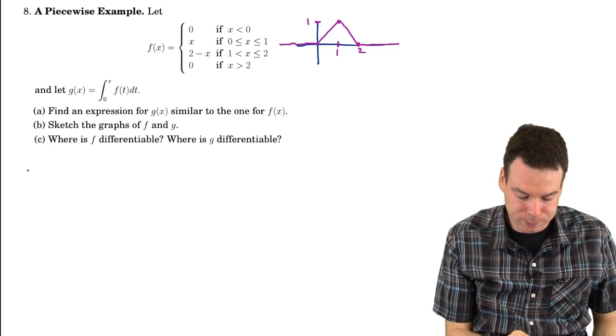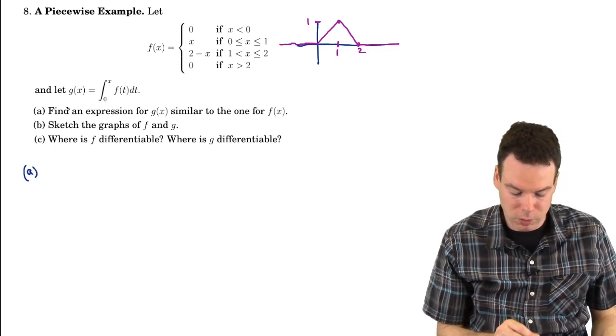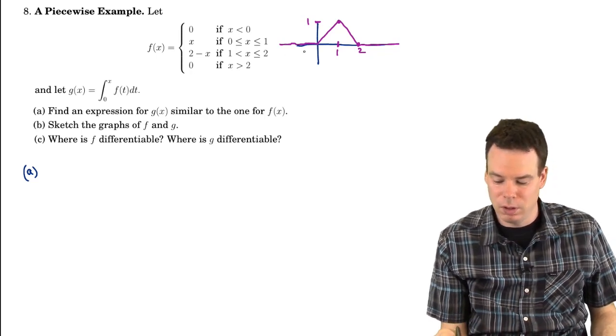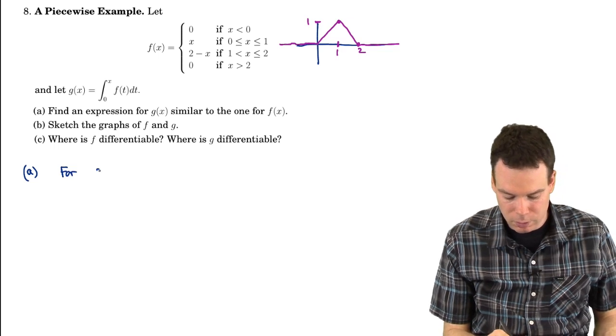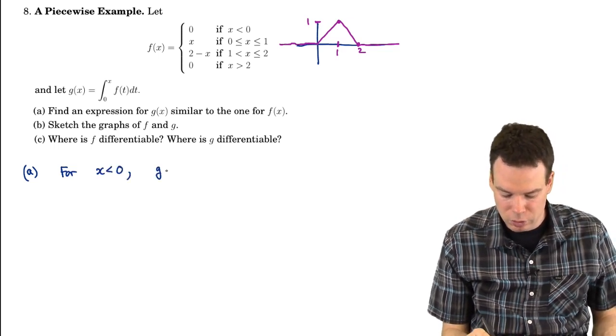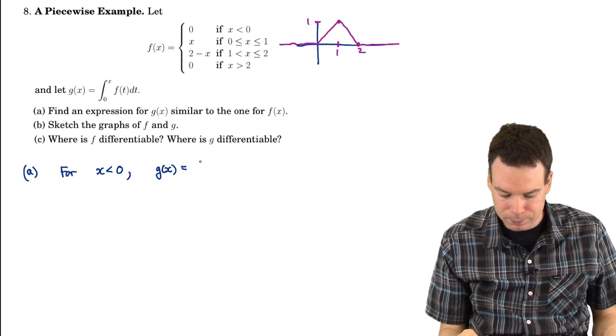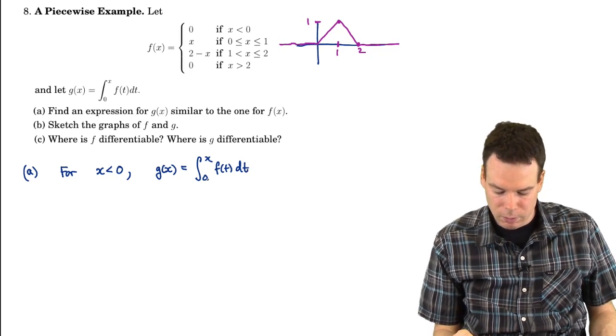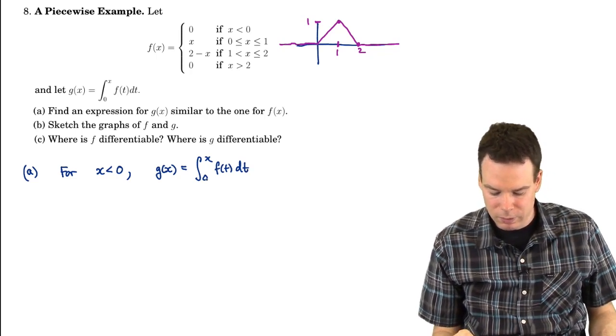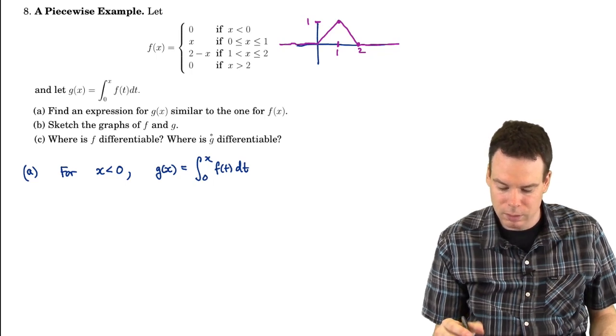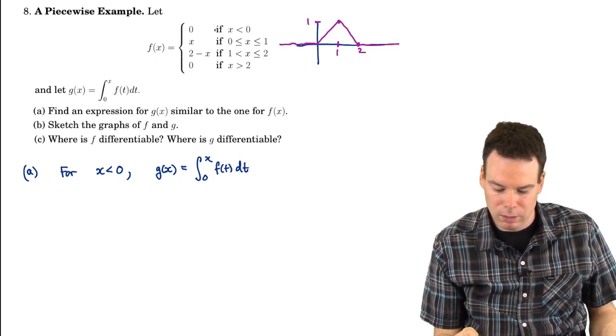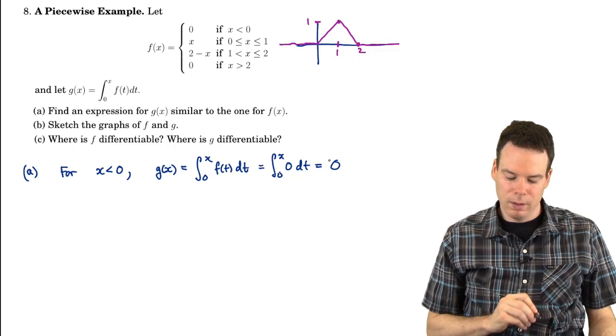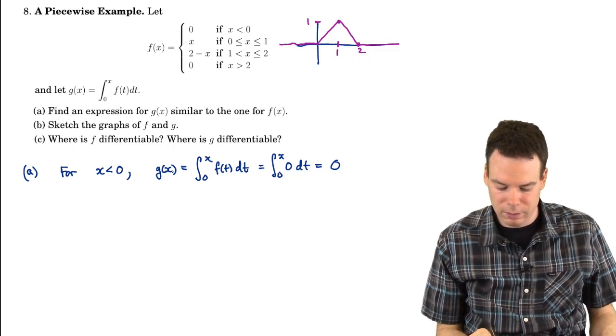And now we want to construct this function G. So we're going to find an expression for the function G. And since F is defined in different ways on a bunch of different intervals, we're going to do the same thing for G. So we're going to look at the different intervals. For x less than 0, what is G equal to? Well, G is defined to be this integral. When x is less than 0, I only care about what the definition of F is on the interval from 0 to x. And in this case, it's always 0. So this is the integral from 0 to x of 0 dt, or 0. So the function G for x less than 0 is always 0.